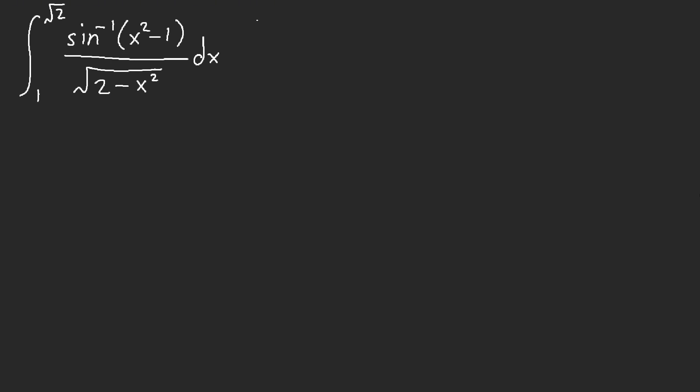But then I realized, wait a minute, x equals square root of two, instead of using sine theta, I want to use cosine theta. The reason is because this is going to become two cosine square theta minus one, and I'm going to get cosine two theta, and I want to do that. And so I was like, ooh, that actually seems very nice, and the derivative is going to cancel that with this.